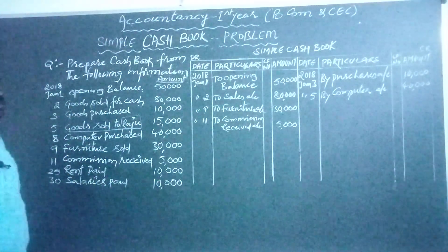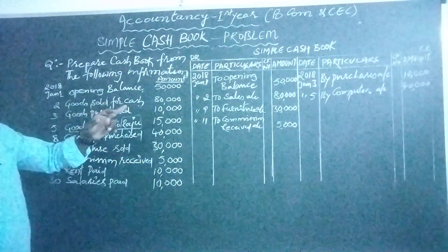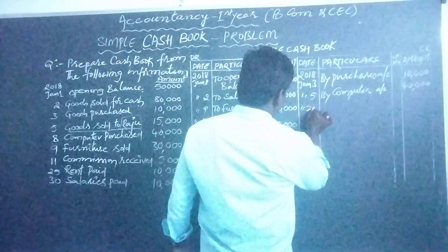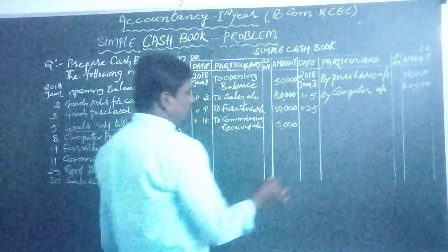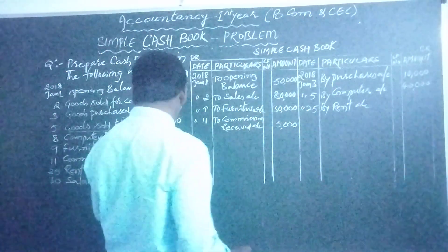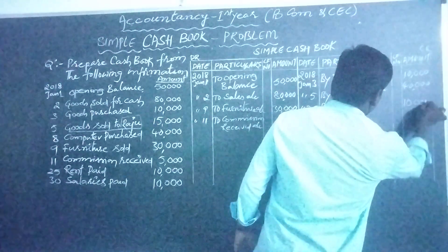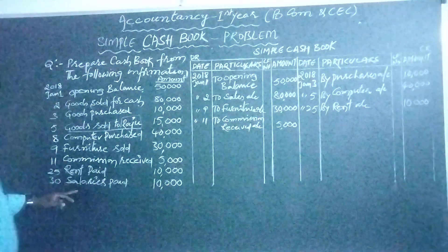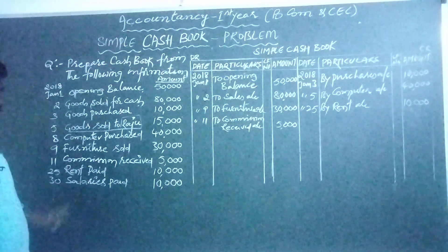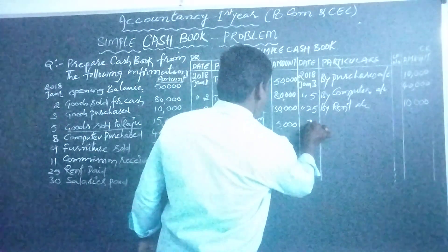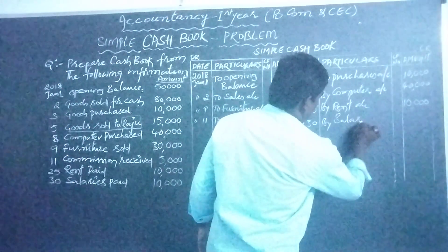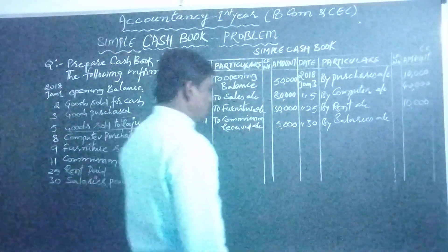Next, rent paid: it is a payment recorded on the credit side. January 25th — 'rent account' — rupees 10,000. Then salaries paid: also a payment, recorded on the credit side. January 30th — 'salaries account' — rupees 10,000.